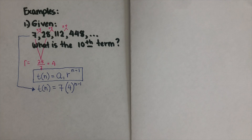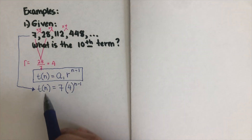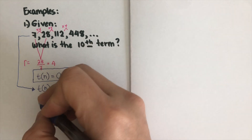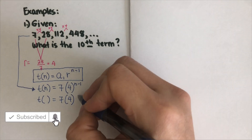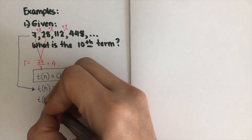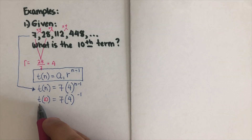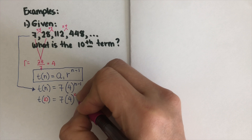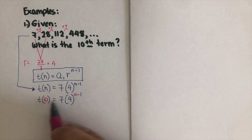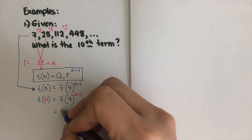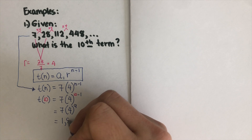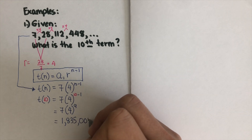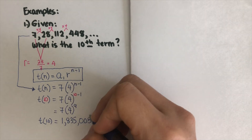We're looking for t(10), so we substitute n = 10 into the equation. Both instances of n become 10, so: t(10) = 7 · 4^(10-1) = 7 · 4^9. Using a calculator, this gives us our answer for the 10th term.